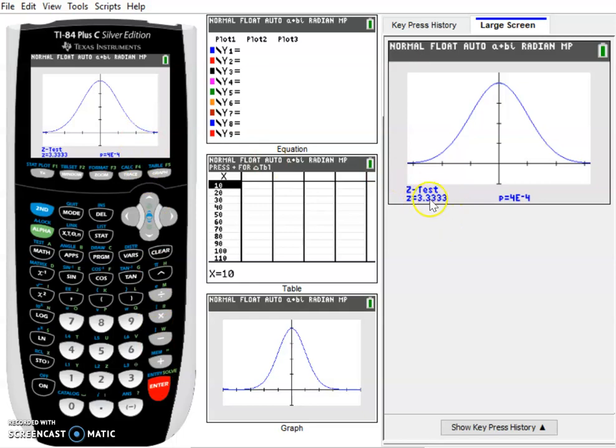The z-value we're getting is 3.333. This is just out here at the edge of the screen, a very small portion of the graph. You can see the p-value here: 4e to the negative 4 is three decimal places and then the 4. This is a very small probability value.